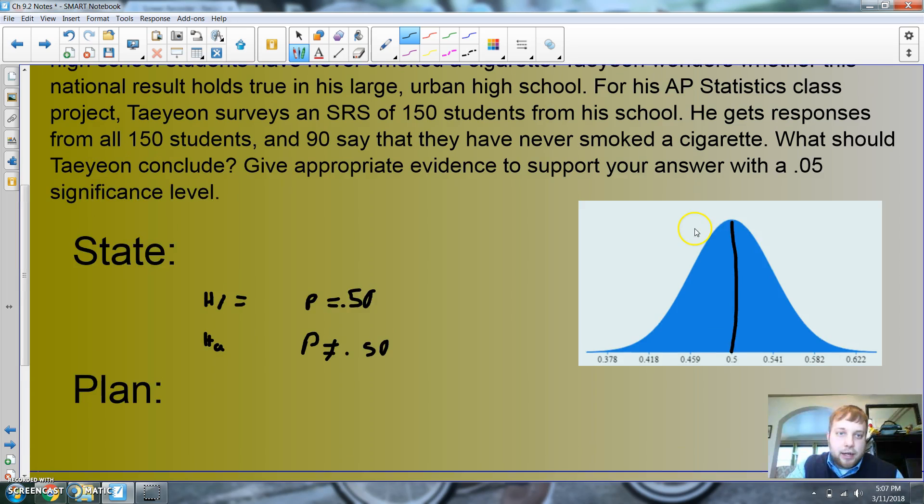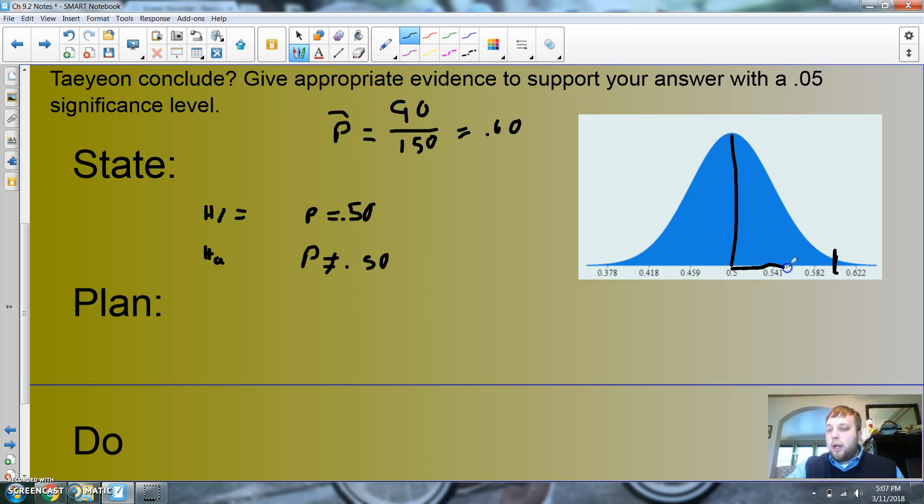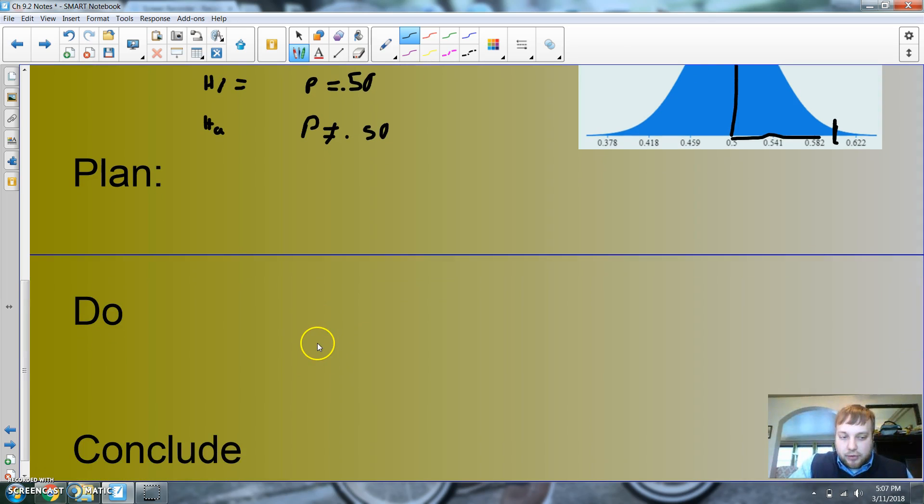Now the plan, I'm not gonna spend time doing the plan. We're gonna go straight to the do. It says 90 say that they have never smoked out of 150. So we should be able to get our p-hat value here quick. So 90 divided by 150, so I got 60% said that they have never smoked at his large urban high school. So we got something that was more like over here. I think we're going to say that his large urban high school is different. I can already tell it's already quite a few standard deviations above, but we'll still go through the process, although it is two-sided.